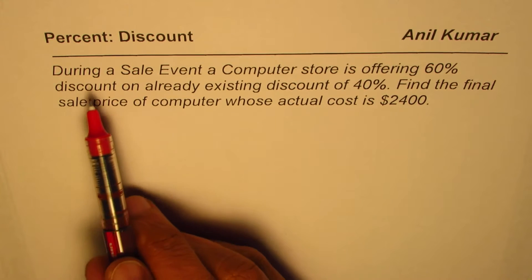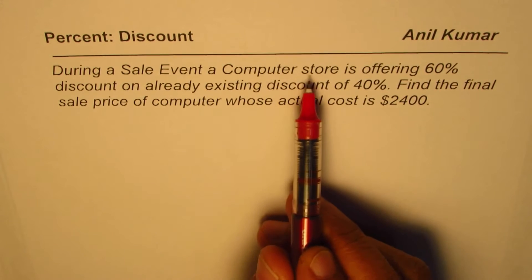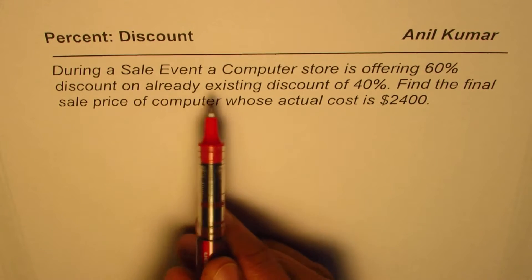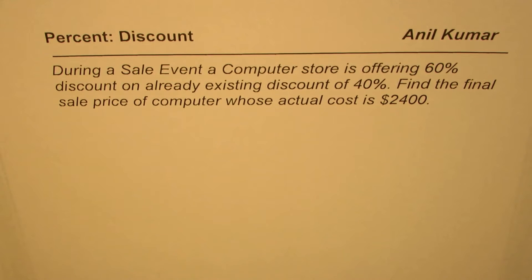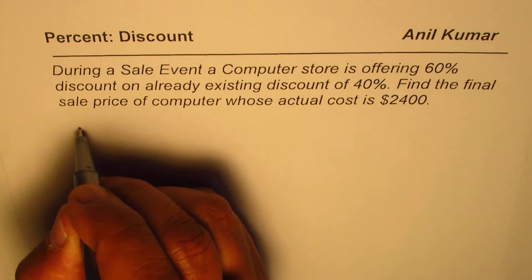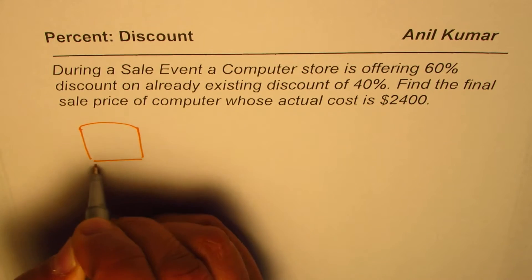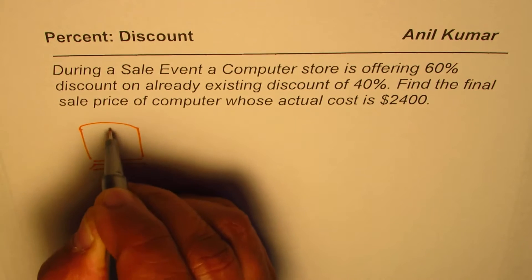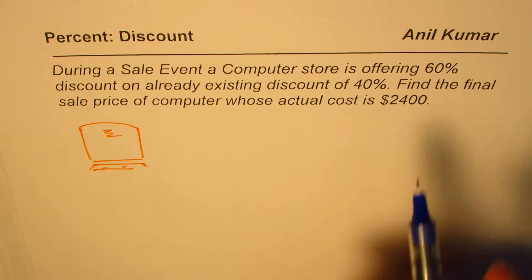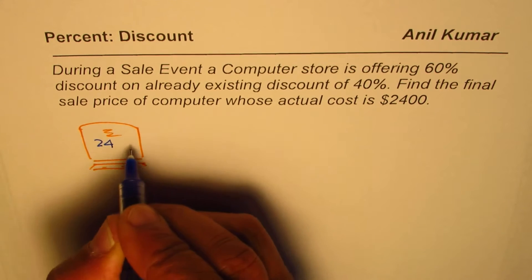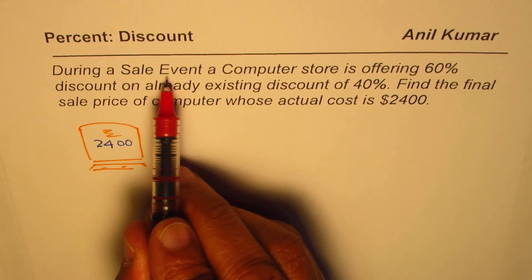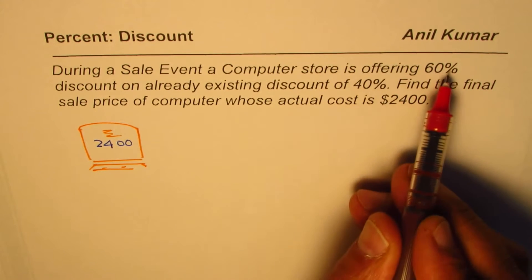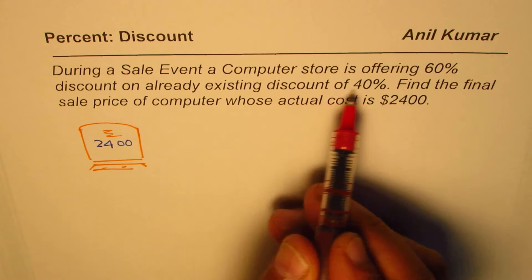The question here is: during a sale event, a computer store is offering 60% discount on already existing discount of 40%. Find the final sale price of the computer whose actual cost is $2,400. So, we have this computer and its original price is $2,400. During a sales event, a computer store is offering 60% discount on already existing discount of 40%.